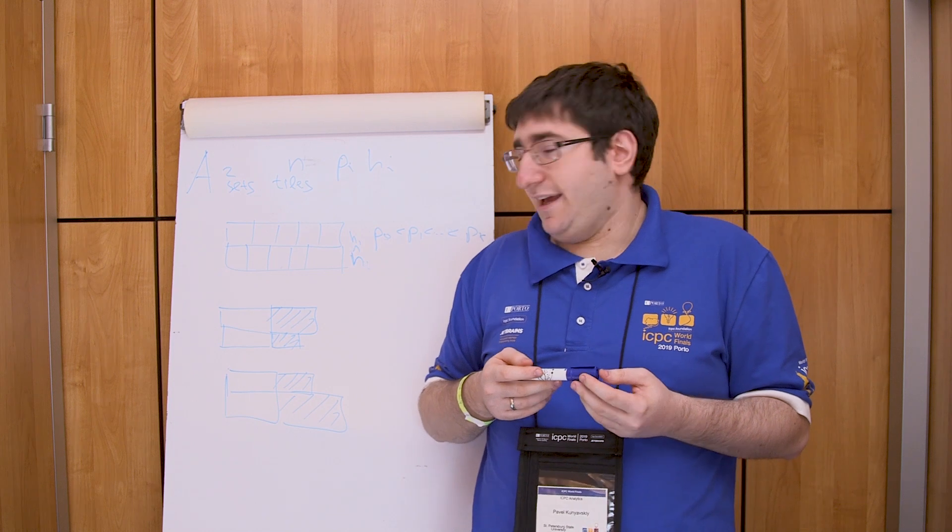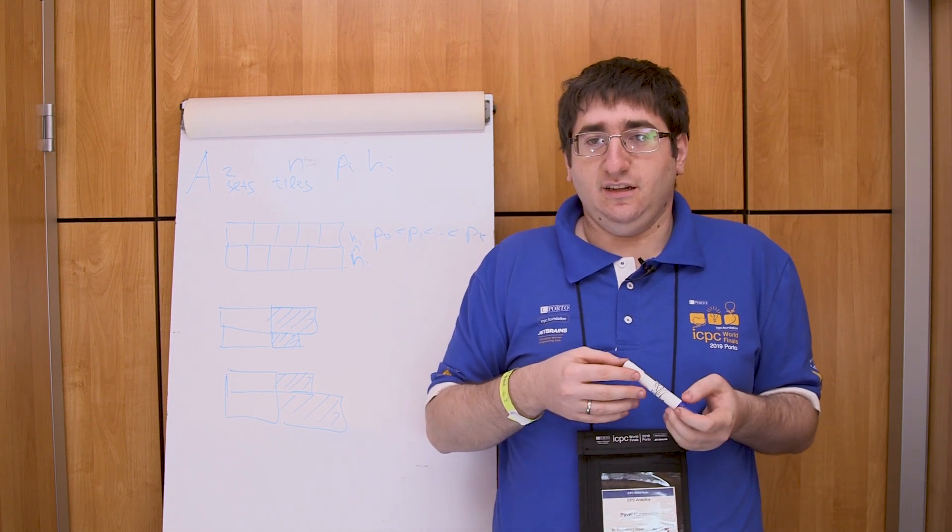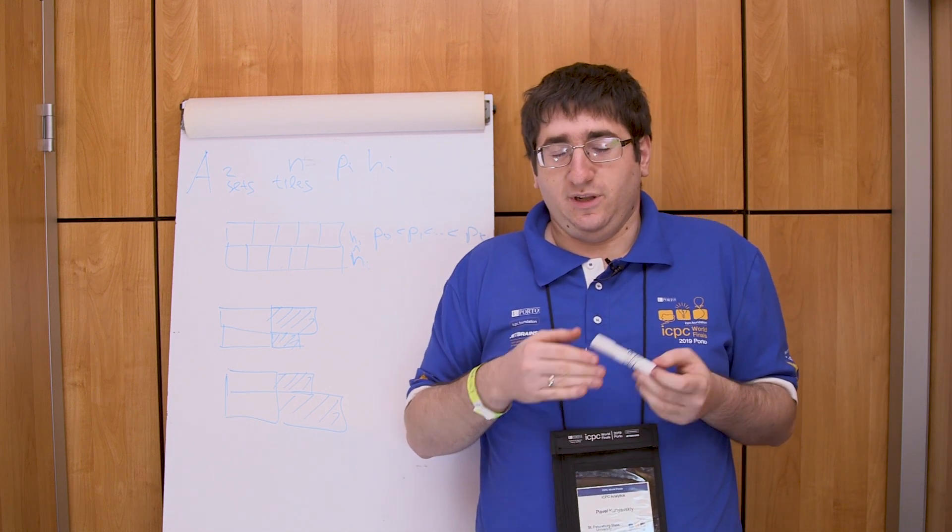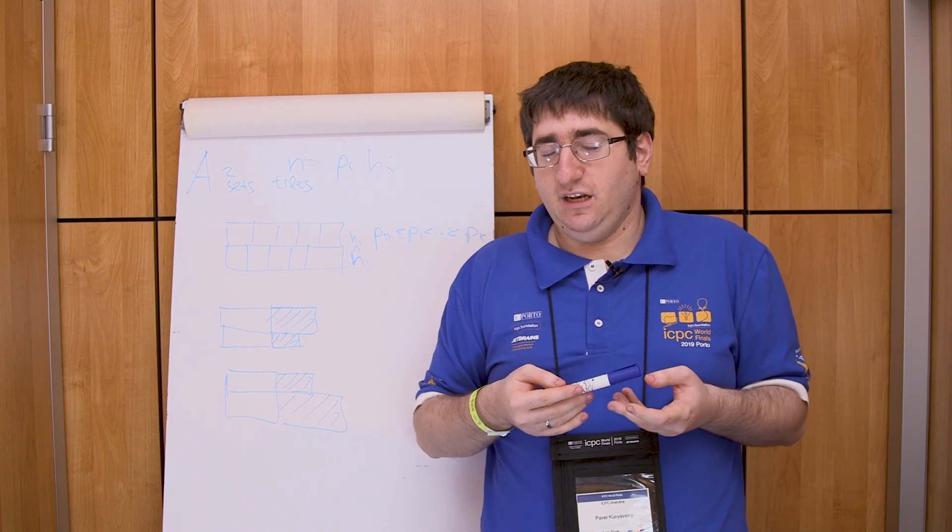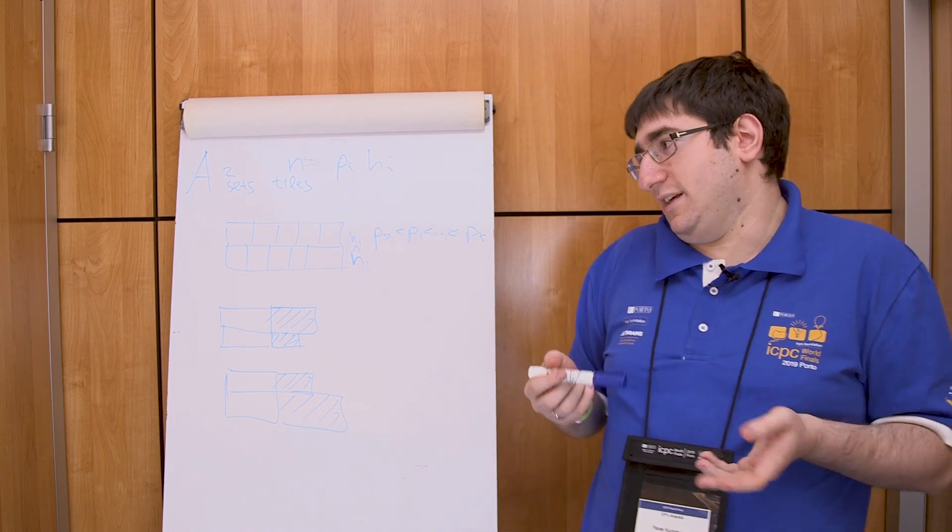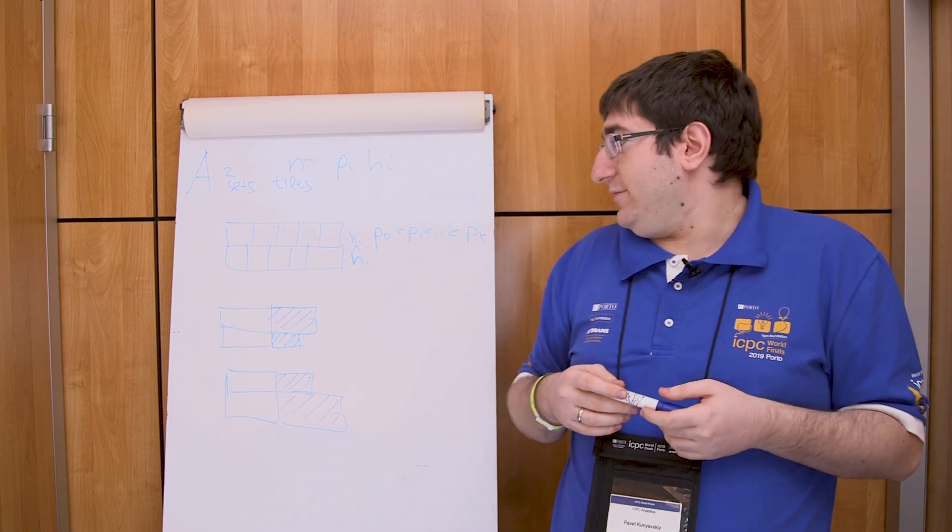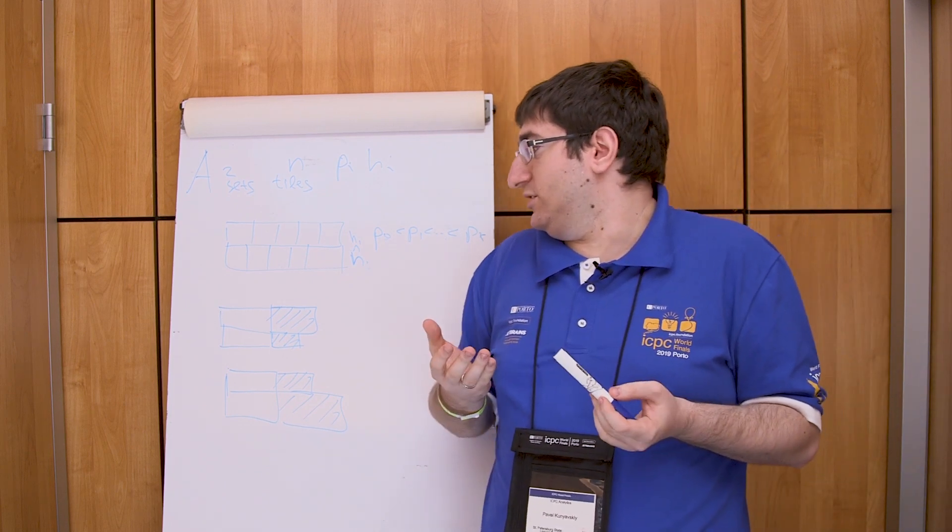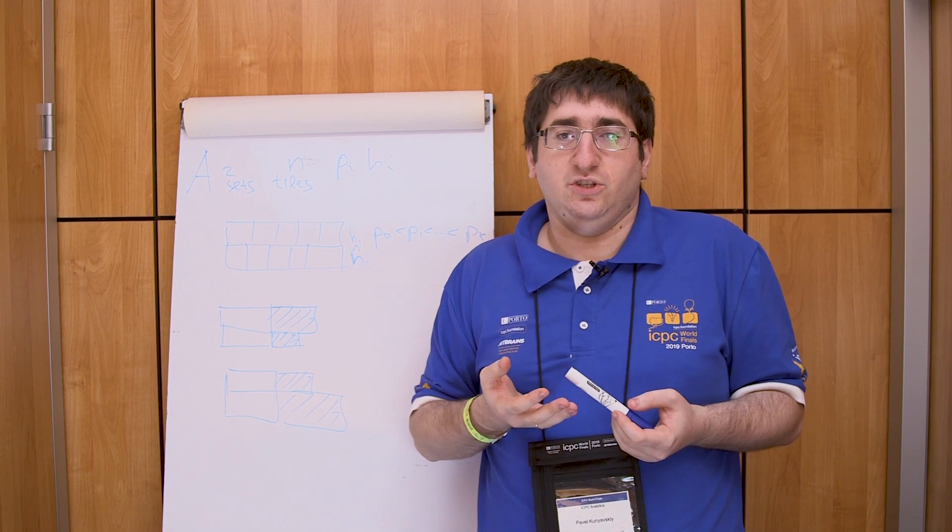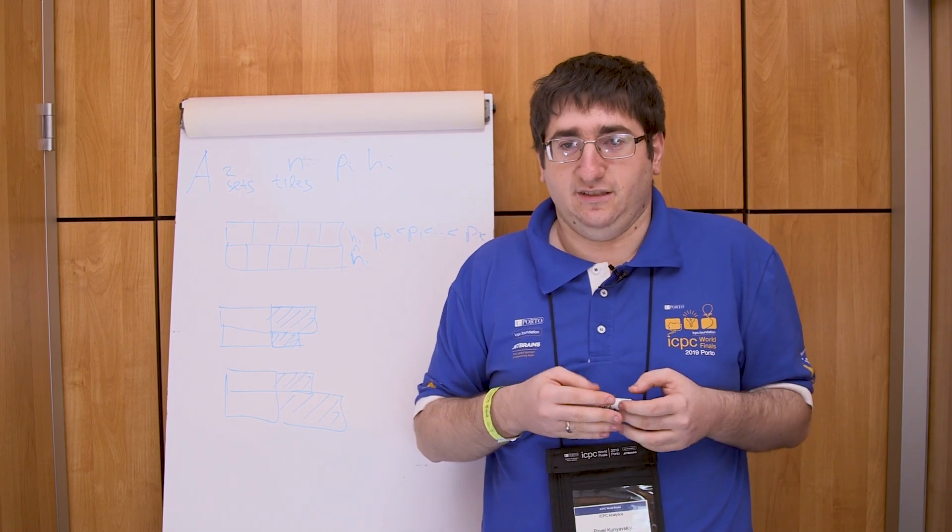Also, the height of the tile in the second line should be lower than the height in the first line, or the tile in the second line would not be visible. So we have these two restrictions and we need to output any ordering which satisfies both or declare that it's impossible.